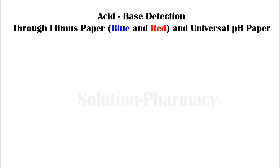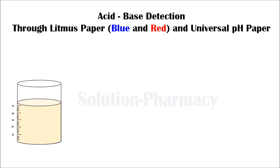Hello friends, welcome to the channel. Today in this animated video we will show you how we can identify whether a given solution is acidic or basic in nature, and what is its pH value. For this we require blue litmus paper and red litmus paper, and for the determination of pH value we require universal pH paper along with the pH scale. So let's start the video.